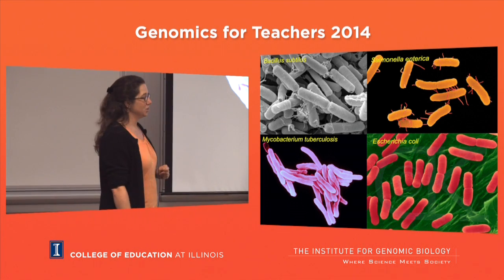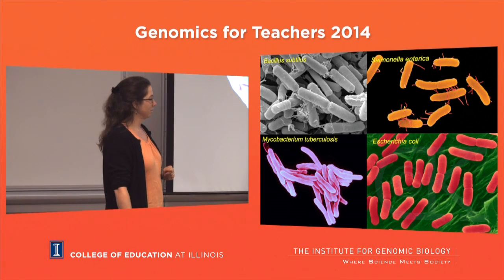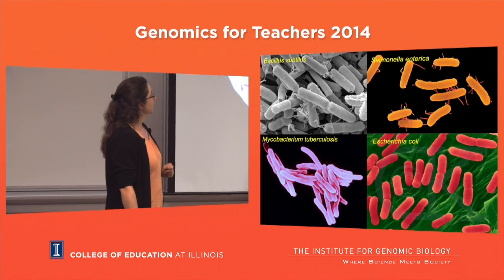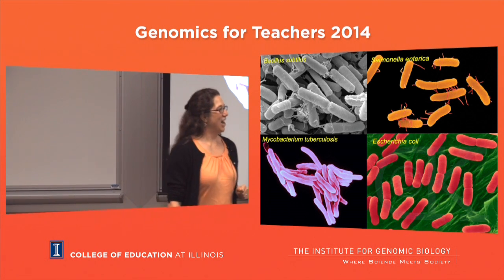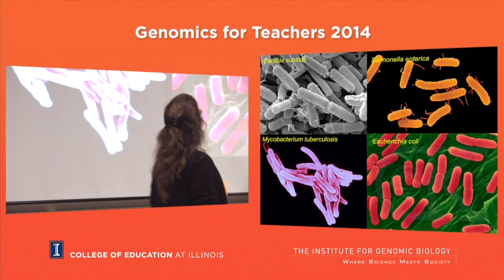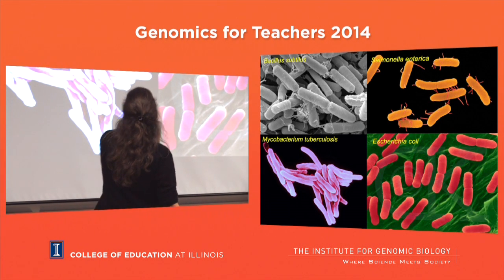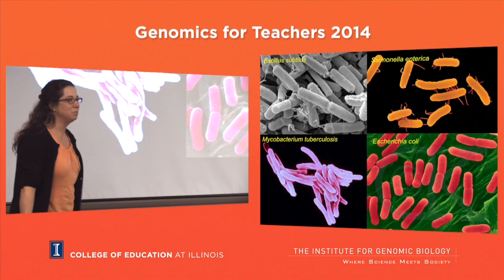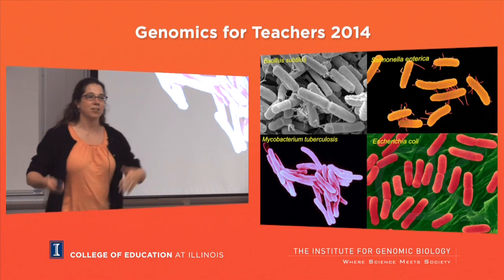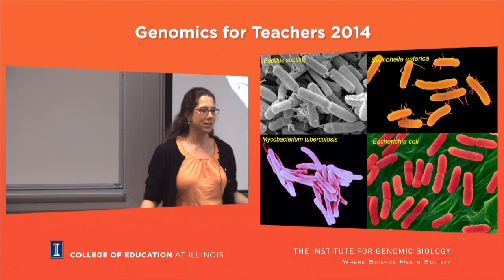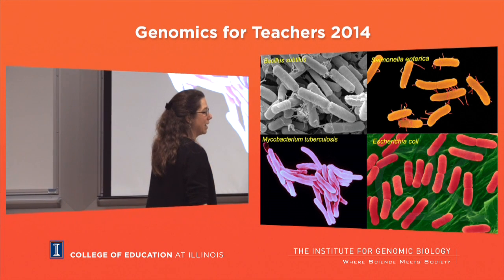A student guesses E. coli is in the lower right - and they're correct. It turns out that Salmonella and E. coli are actually the most related, but you'd never know that. Even at the resolution of an electron microscope you couldn't tell that.